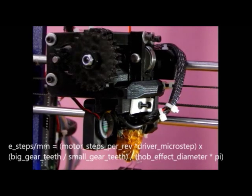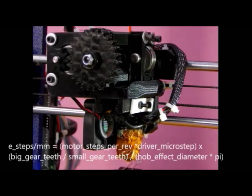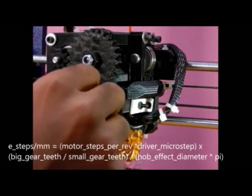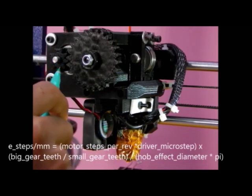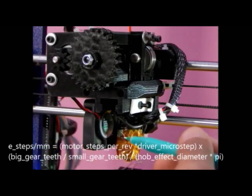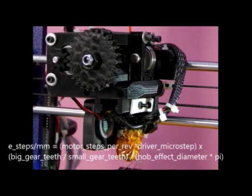And the whole thing will be multiplied by big gear teeth, that is the total number of teeth present in this gear, divided by small gear teeth, that is the total number of teeth in this small gear.